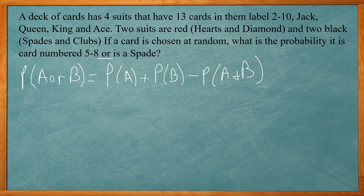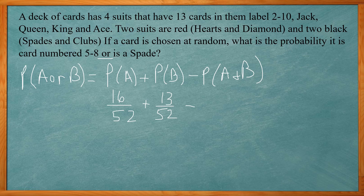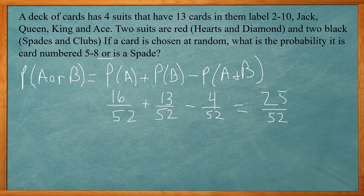The probability of choosing a card numbered five through eight: five, six, seven, eight is four cards across four suits — that's 16 out of 52. The probability of a spade is the whole suit, 13 out of 52. The probability of a and b — a spade numbered five through eight — is four out of 52. Adding: 16 plus 13 minus 4 gives 25 over 52. That's already in lowest terms, so our answer is 25/52.